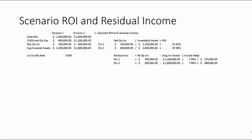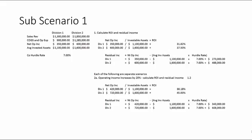For Division 2 we have $600,000 divided by $1.6 million, which gives us 37.5 percent — that's really good. For residual income, we take net operating income minus the average investable assets times the hurdle rate. For Division 1 that's $350,000 minus $1.1 million times 7 percent, giving us residual income of $273,000. For Division 2 we get $488,000.